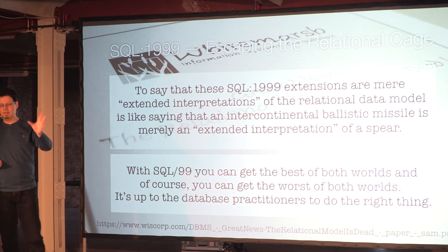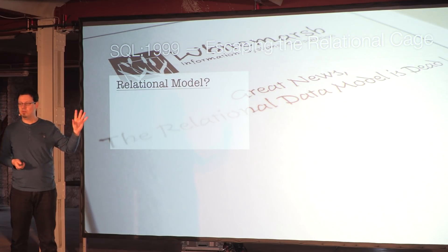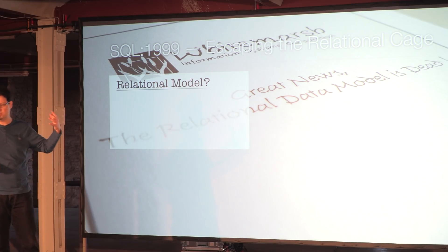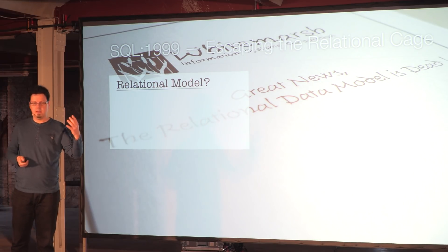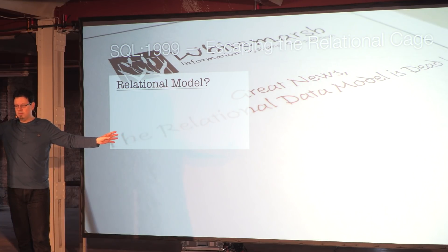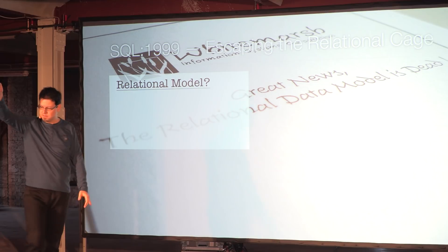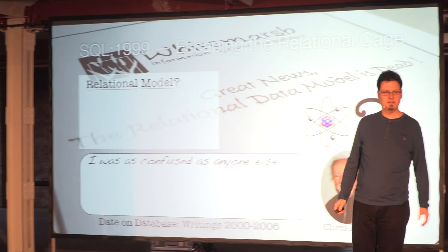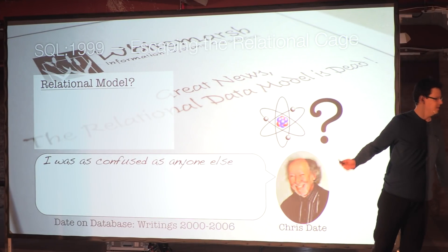So there are now two ways to approach each problem and it's up to you to choose which one is more appropriate. So what does that actually mean? Let's look at this relational model thing, extended interpretation of the relational model. So Chris Date, a database scientist, wrote about that. I would like to quote him. He said, I was as confused as anyone else. Yeah, well, what was he confused about?